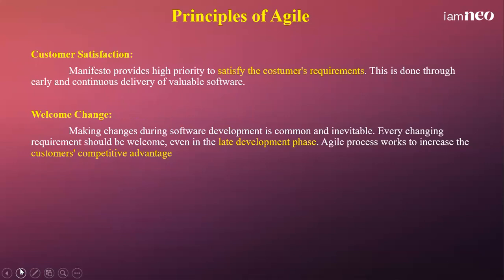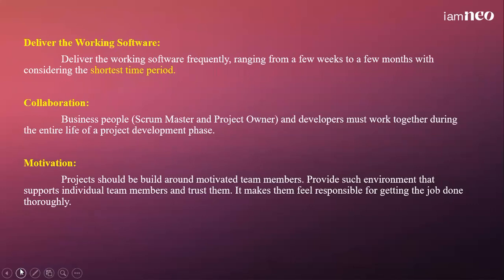Principles of Agile: The major principle followed by Agile teams is first, customer satisfaction. The main aim of the Agile team is to satisfy the customer's requirements, and they will welcome any change given by the customer at any stage of development, even in the late development phase. Next is delivering working software frequently. All the phases in the software development cycle will be done in an iterative manner. At each iteration, some software increments will be delivered. The time period of each iteration will be a few weeks or months, and some software modules will be delivered in working condition.